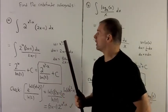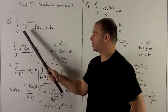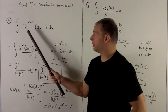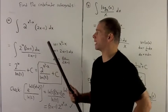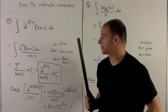So, at a glance, we see we have a composition here that would be 2 to the u composed with x squared minus x. So we're going to use a u substitution.